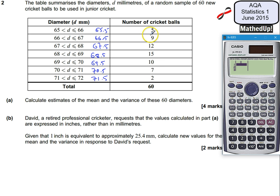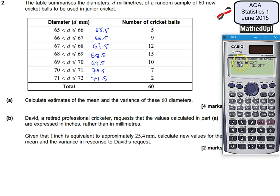However, I want a frequency table, so I'm going to go to shift and setup and scroll down to the second menu. I want number 3, which is stat, and that's going to allow me to switch on the frequency mode. So I'll just switch that on. Now I can put in my values of the diameter of the cricket balls, and then in the second column I can put the frequencies.